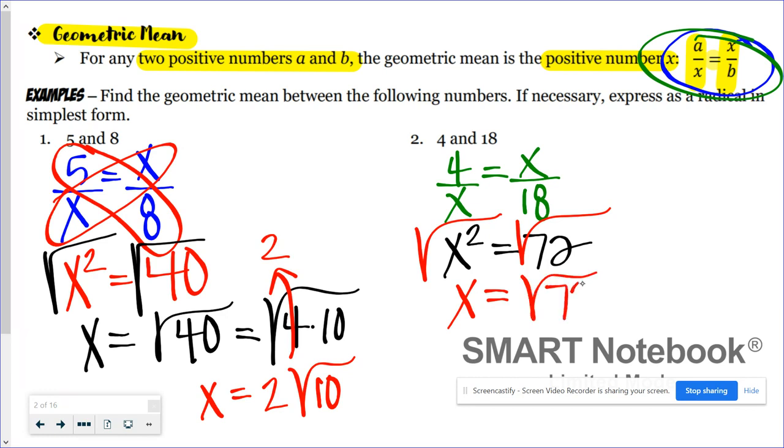And yes, I should definitely simplify that. Since 72 is 36 times 2, I know that this is 6 root 2.